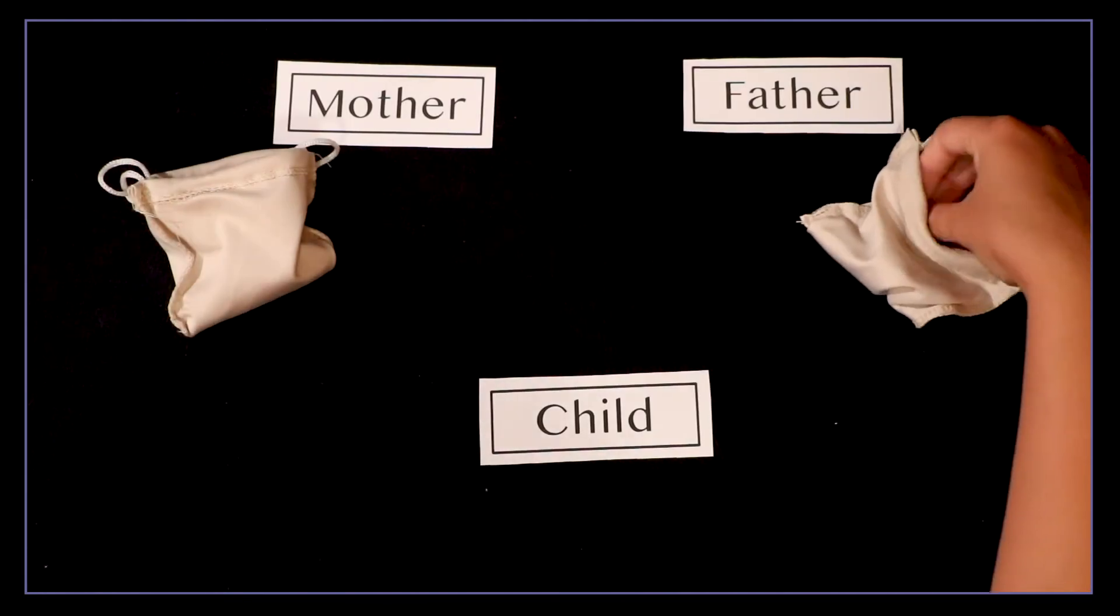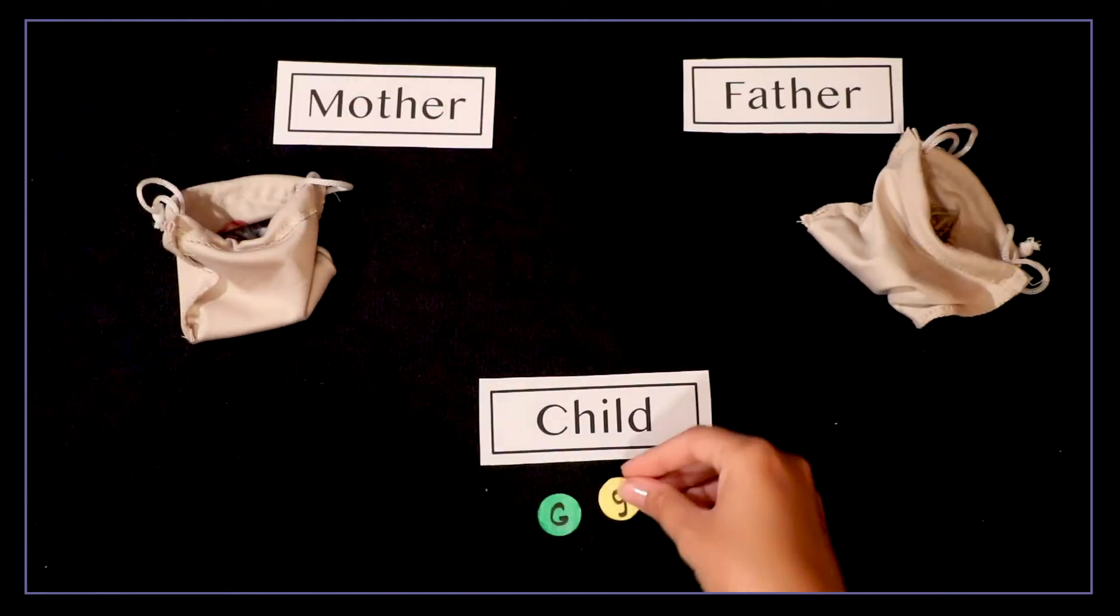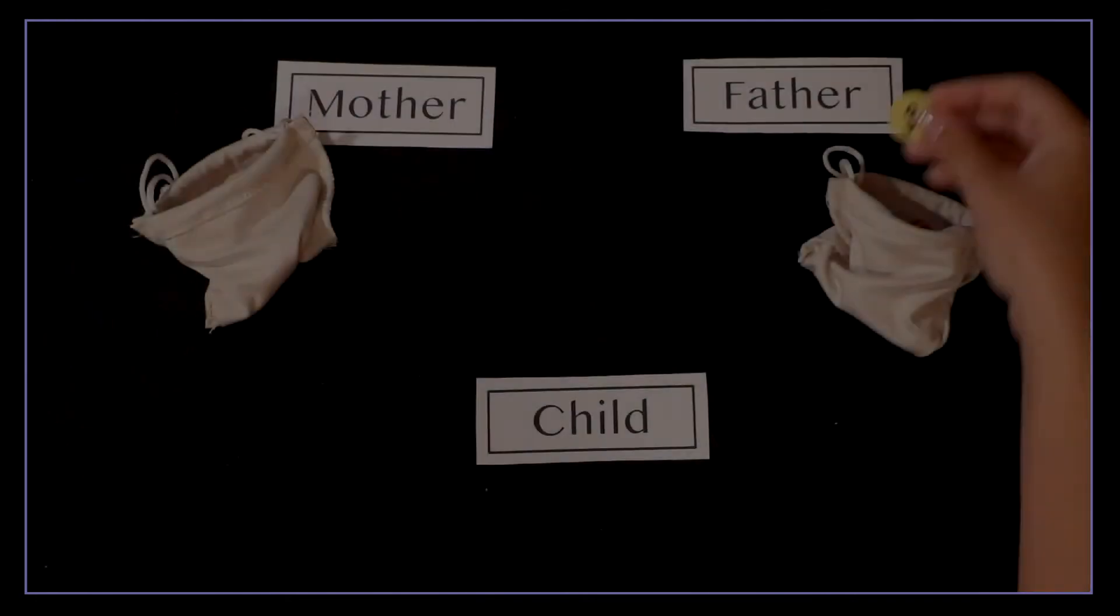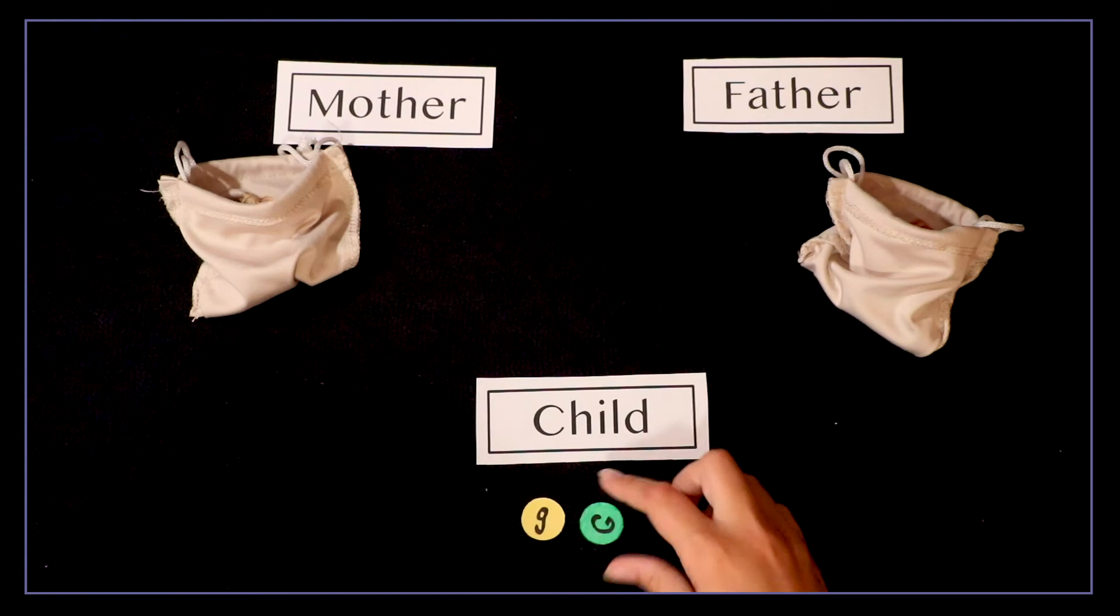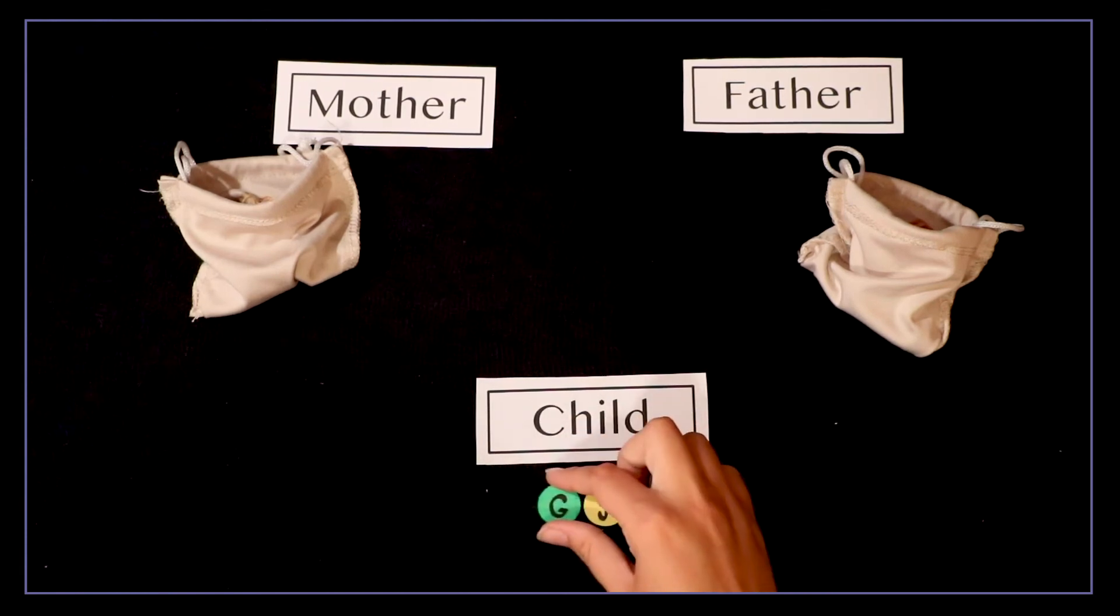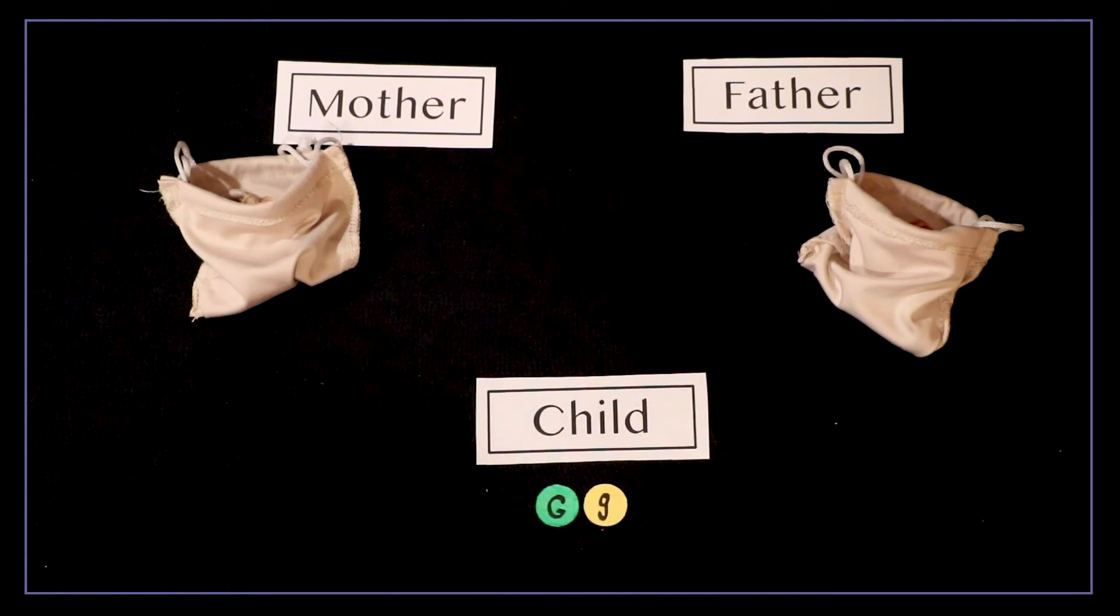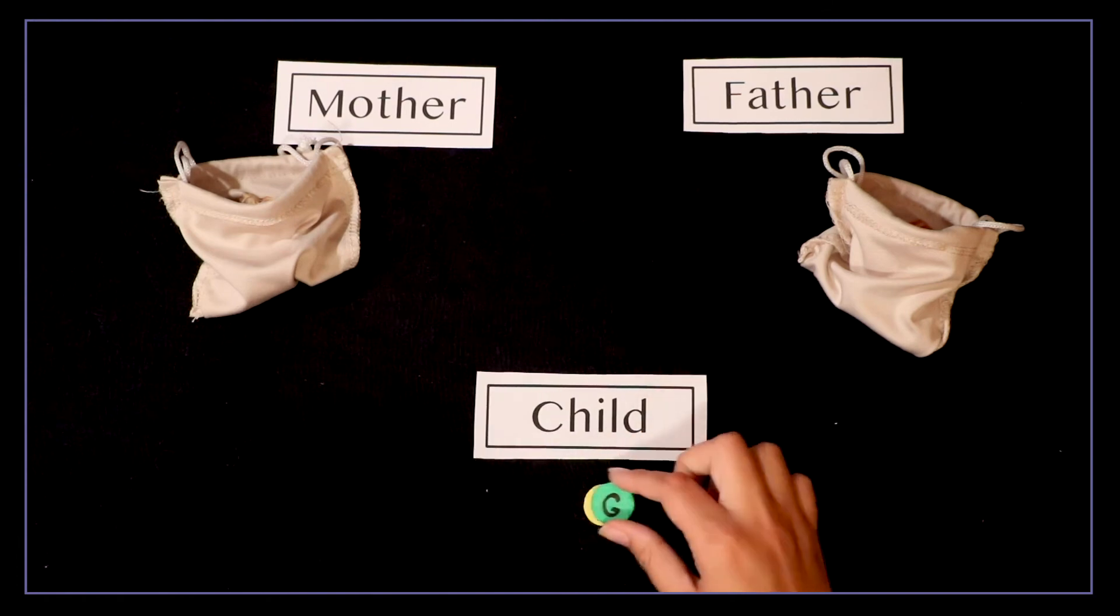I also could just as easily pull green from the father and yellow from the mother or similarly yellow from the father and green from the mother. Those babies would be then genotypically heterozygous uppercase G lowercase g and phenotypically green.